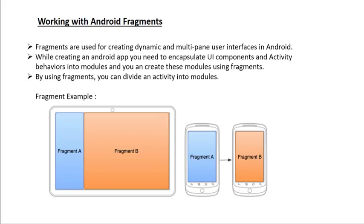Here we have two screen sizes: a large screen and a standard screen size. We have a single activity on both screen sizes, but we divide that single activity into two modules. The first module is Fragment A and the second module is Fragment B. On a large screen, we display the two modules at the same time, but on a small screen we display one module at a time and the user has to click Fragment A to open Fragment B.